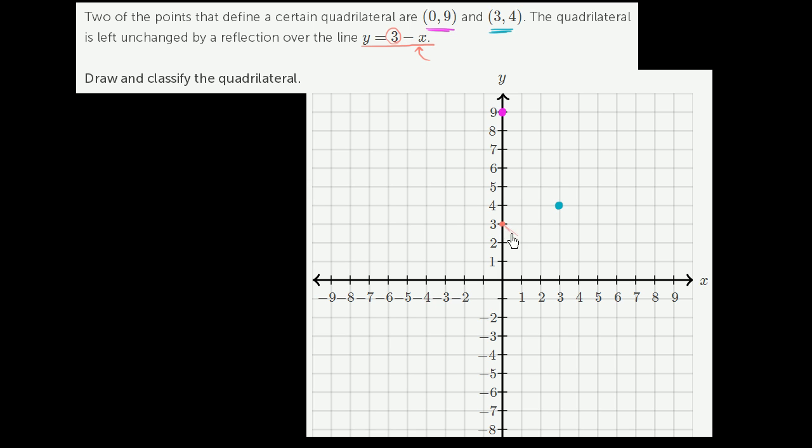So it has a slope of negative 1. So the line looks like this. Every time we increase our x by 1, we decrease our y by 1. So the line looks something like this. Y is equal to 3 minus x.